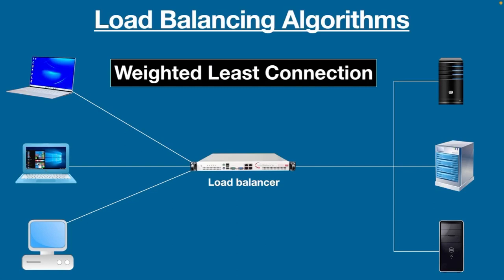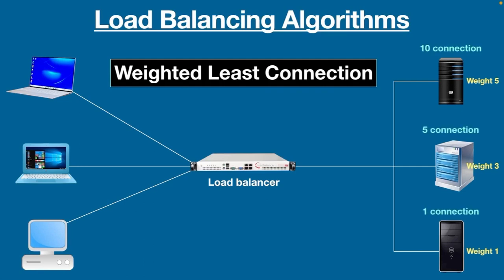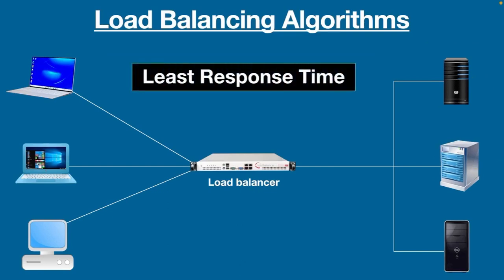The fourth one is Weighted Least Connection. With this algorithm, you can assign different weights to each server based on their capacities, just like Weighted Round-Robin. But the difference is this algorithm not only considers the weight of each server but also the least number of client connections. So when a client request comes, the load balancer sends it to the server that has the least number of connections by weight.